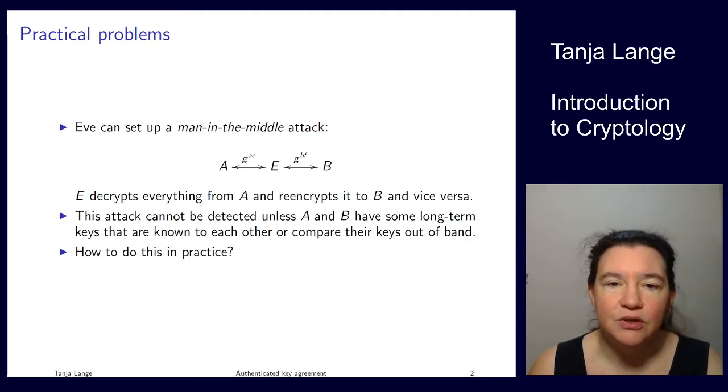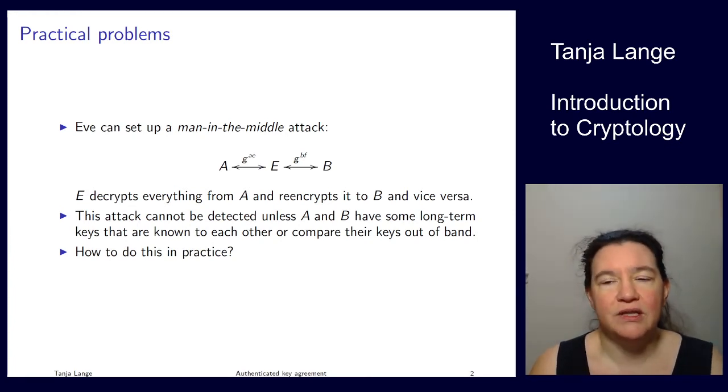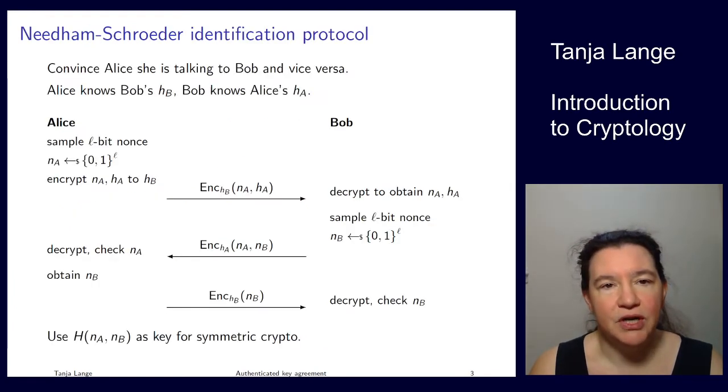Now we will always assume that Alice and Bob know each other by their long-term keys. So whether it's signing keys or Diffie-Hellman keys, they do know each other. So let's start with what is called the Needham-Schroeder identification protocol. Needham and Schröder came up with two protocols. This is the public key version. There's also a symmetric key version, which is for instance used in Kerberos.